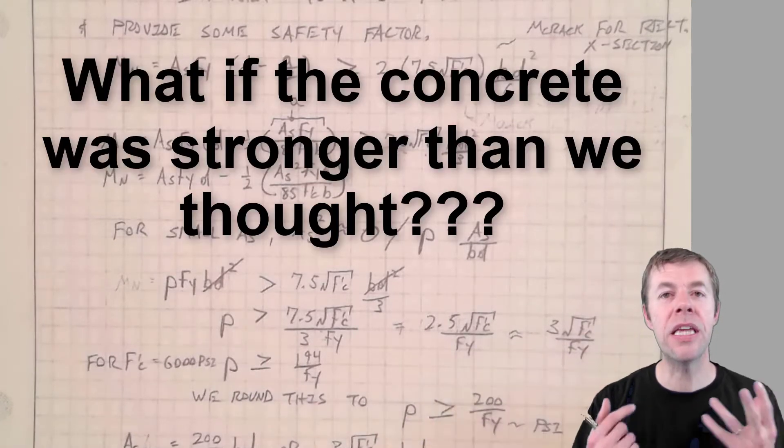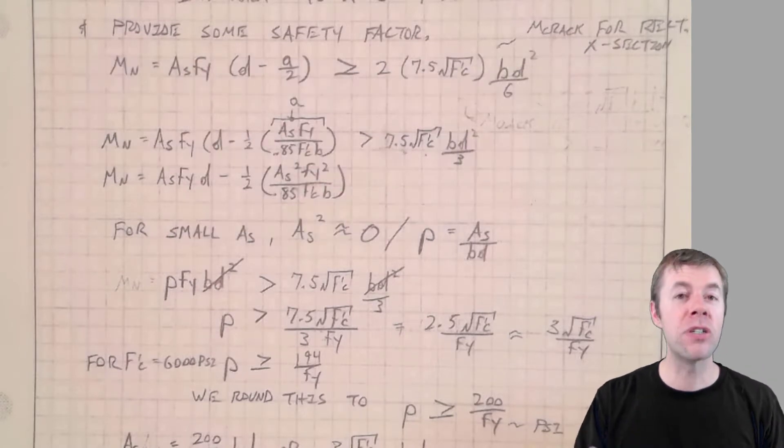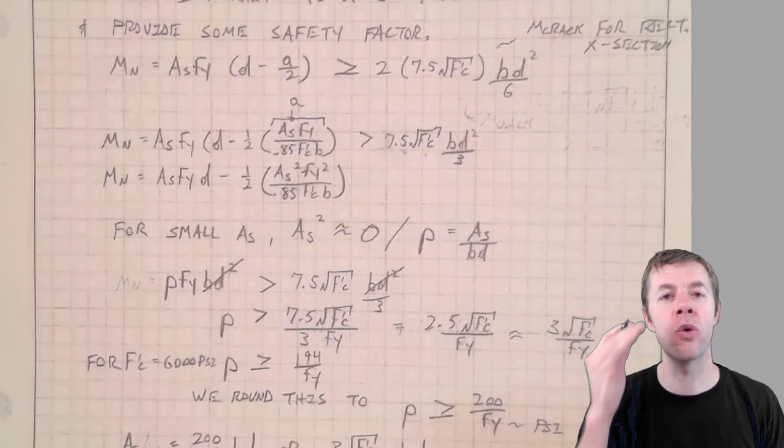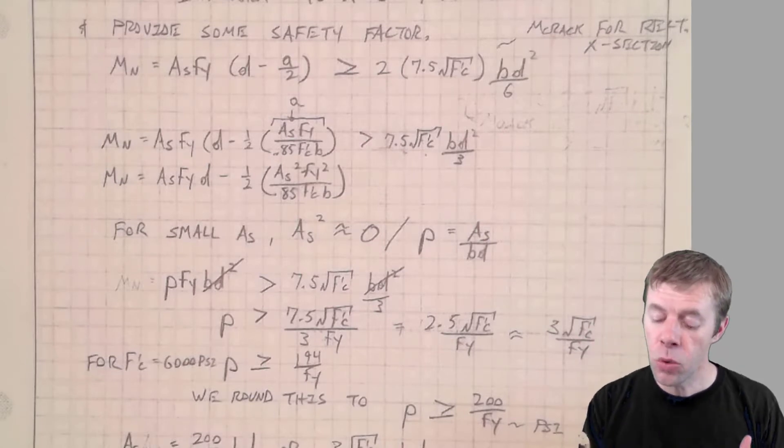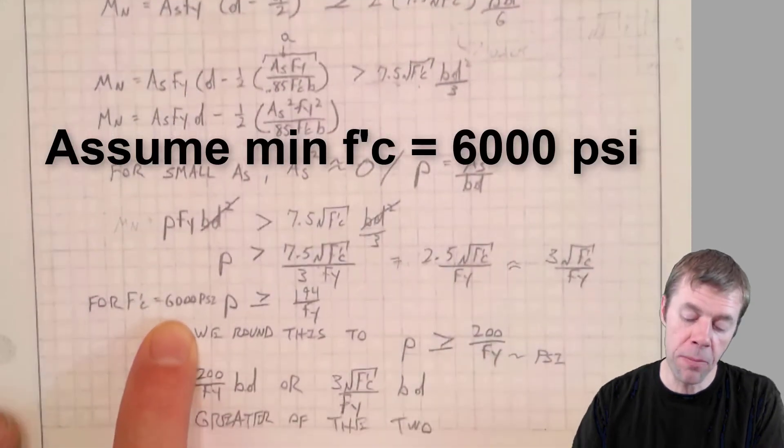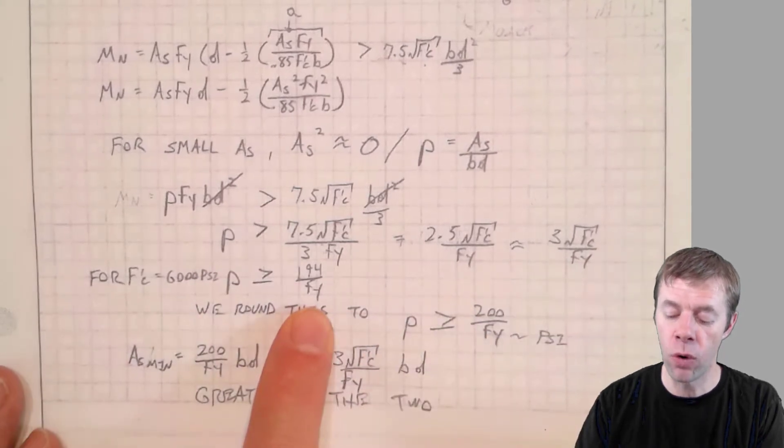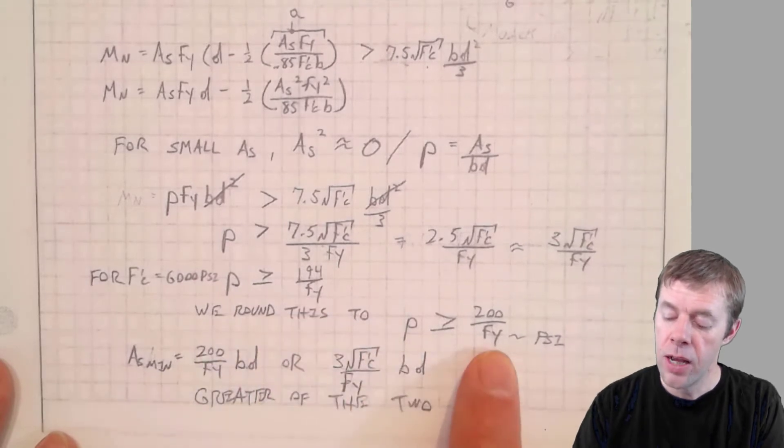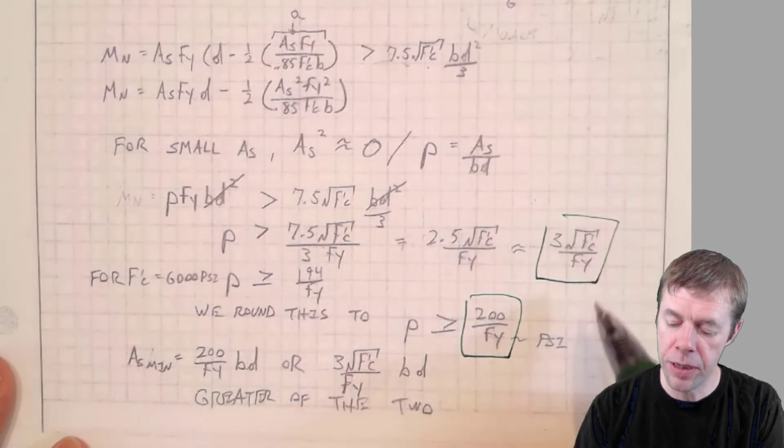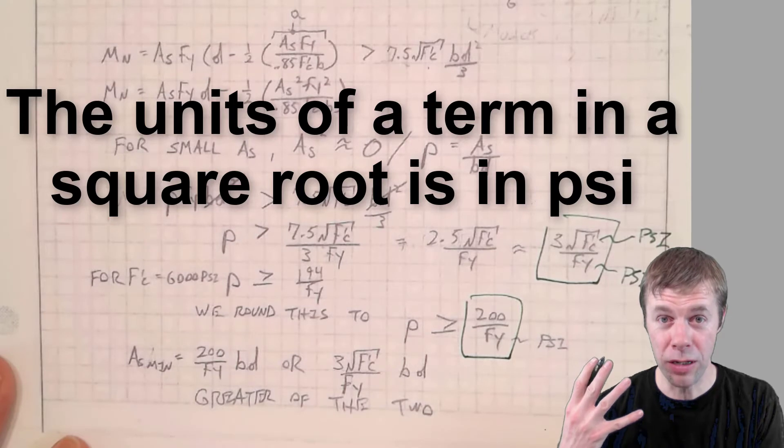But what if somebody gave you some stronger concrete than what you needed? That actually happens a lot. Even if we're designing for a concrete that's like 4,000 PSI, there's overstrengths in the concrete design that make your compressive strength be even higher. So what ACI said is, we're going to have a minimum F prime C of 6,000 PSI. If somebody gave you 6,000 PSI concrete without you knowing it, that would simplify this equation to be 194 over FY. And we're going to change that or round that up to 200. So now we've got some magic numbers here. There's one of them. And there's one of them. Both of these are in PSI. PSI, PSI, and anything underneath a square root is always in PSI.